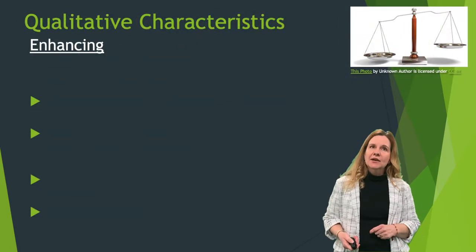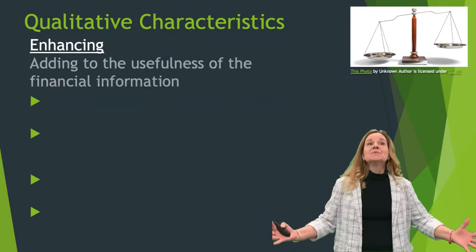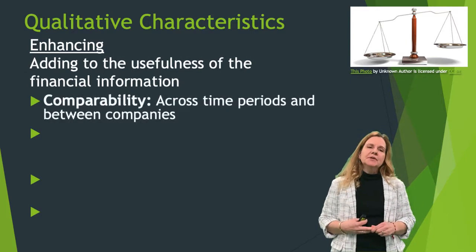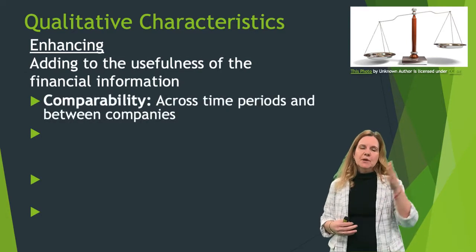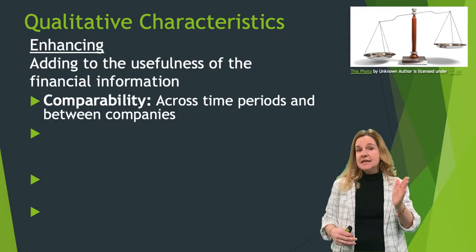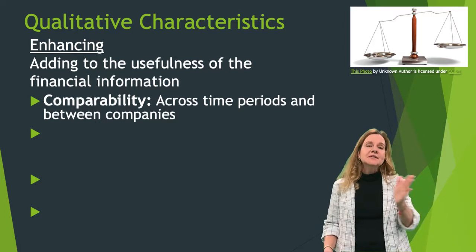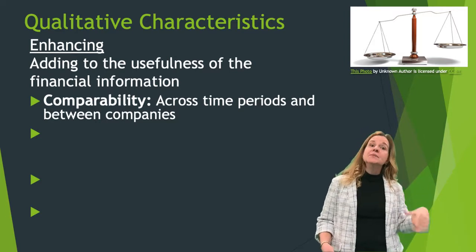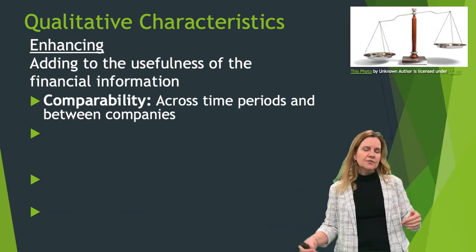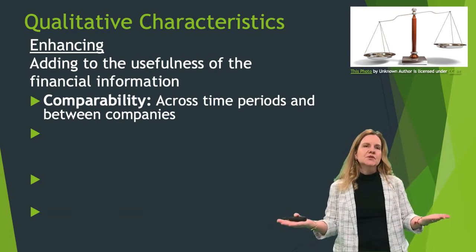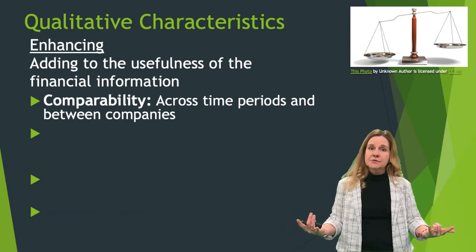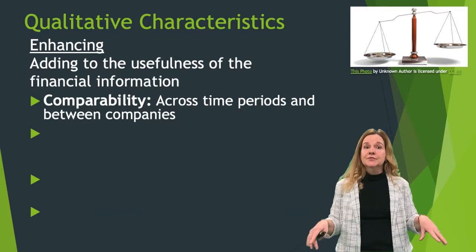Enhancing is the next category of qualitative characteristics — adding even more usefulness to financial information. They need to be comparable. Comparability means across time: looking from one year to the next, using the same estimates and same principles, and if those change, it needs to be disclosed. It also needs to be comparable to other companies — for example, comparing two soft drink companies should be possible because they're using the same accounting principles, with disclosures noting any differences.